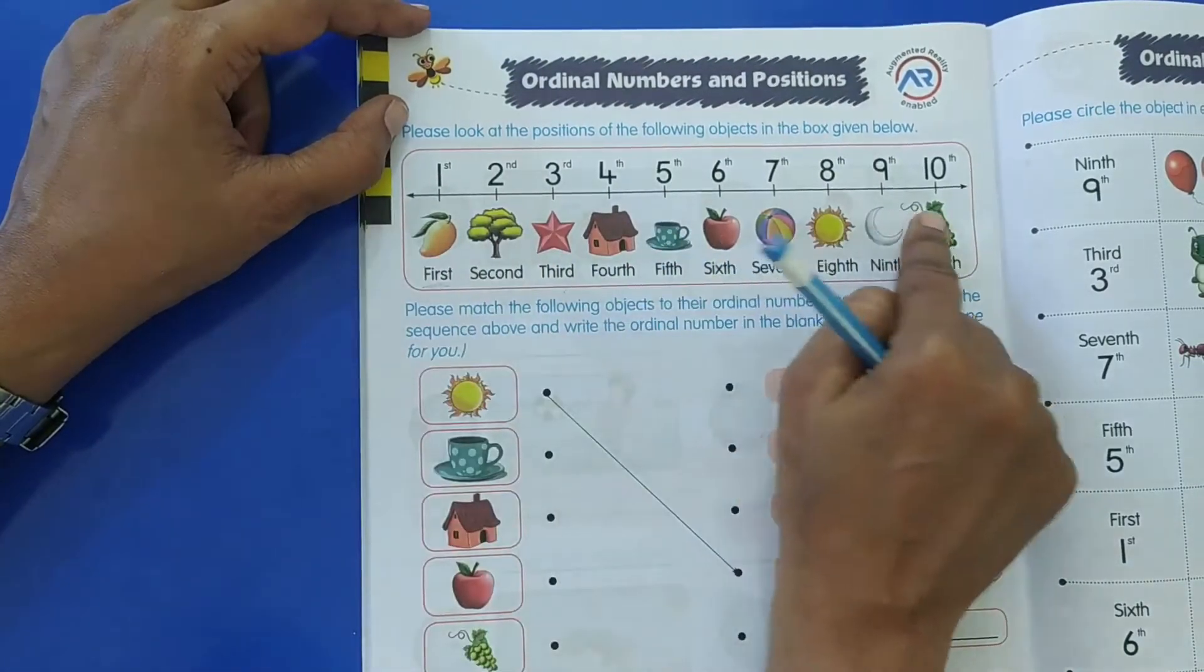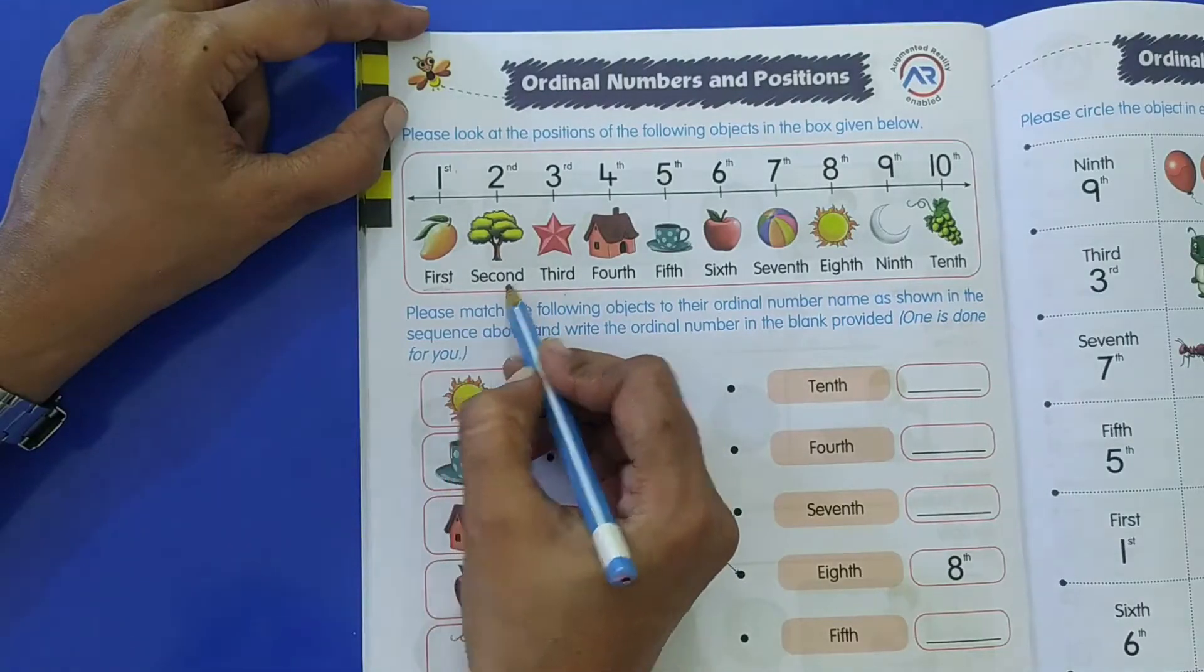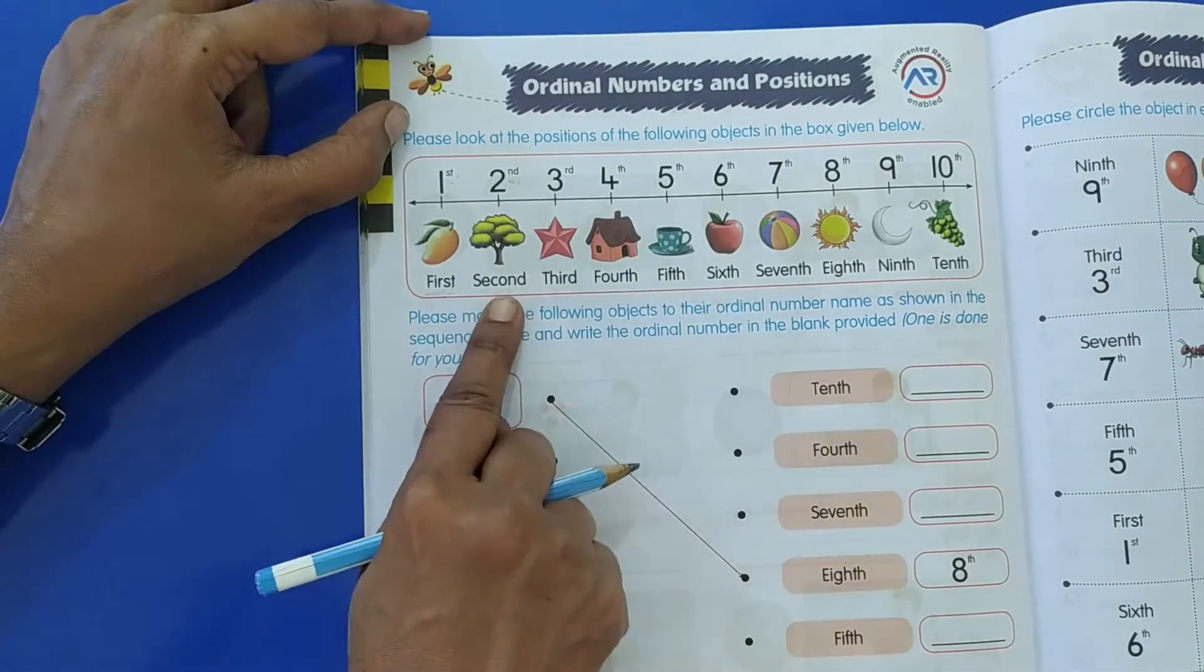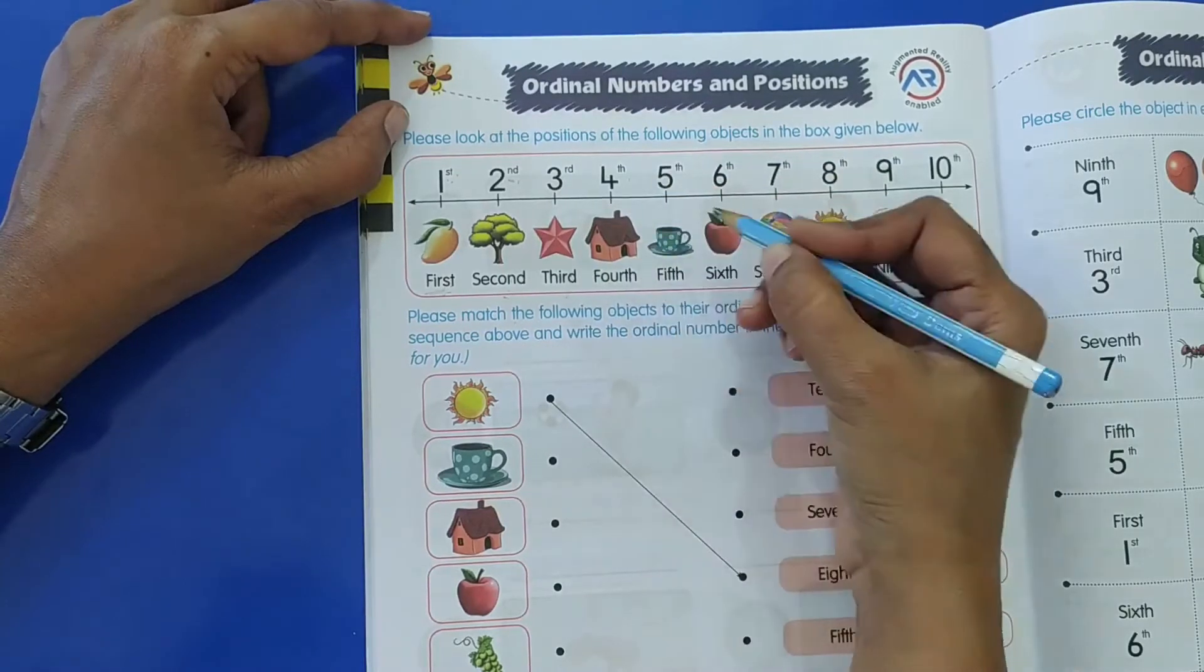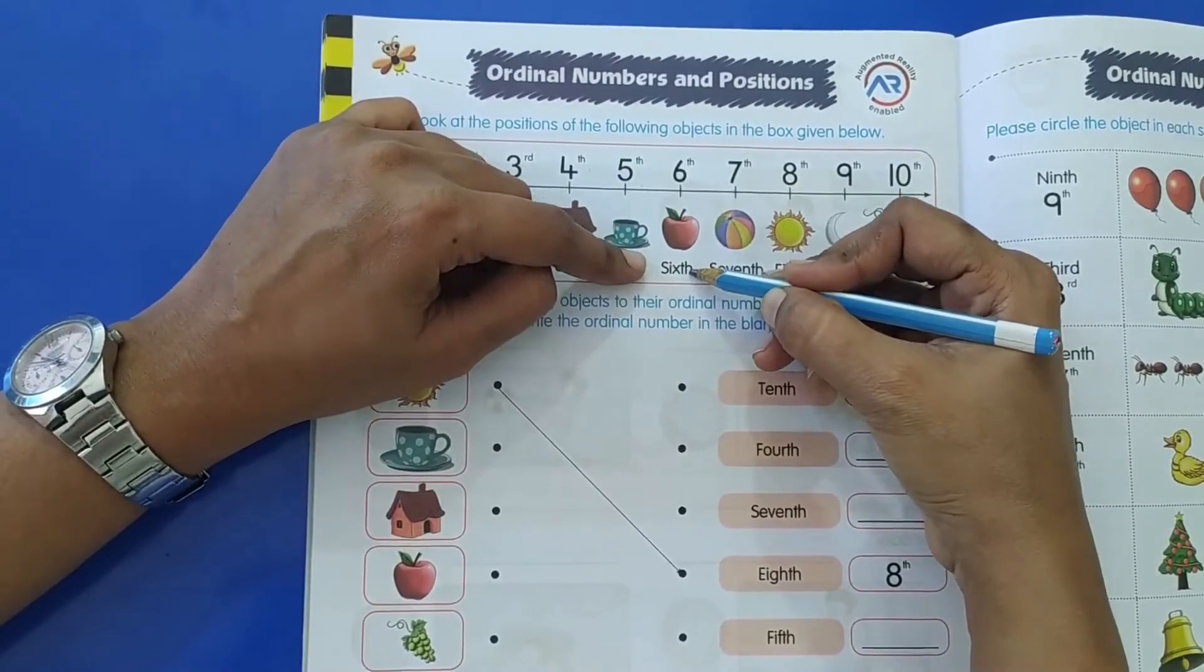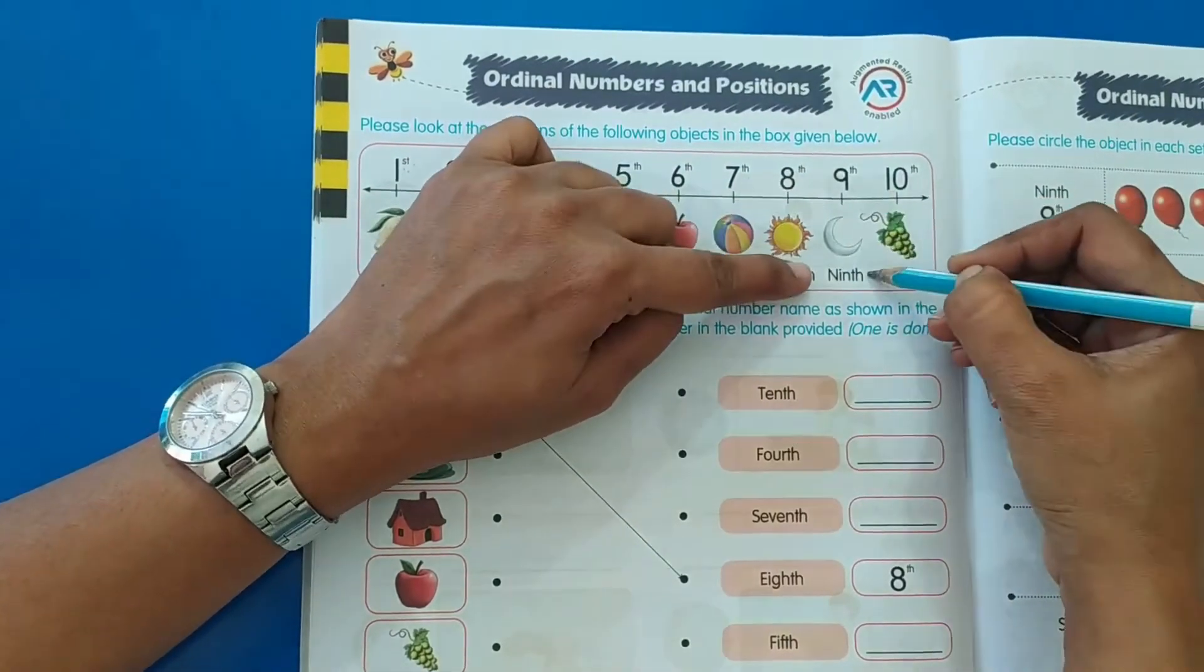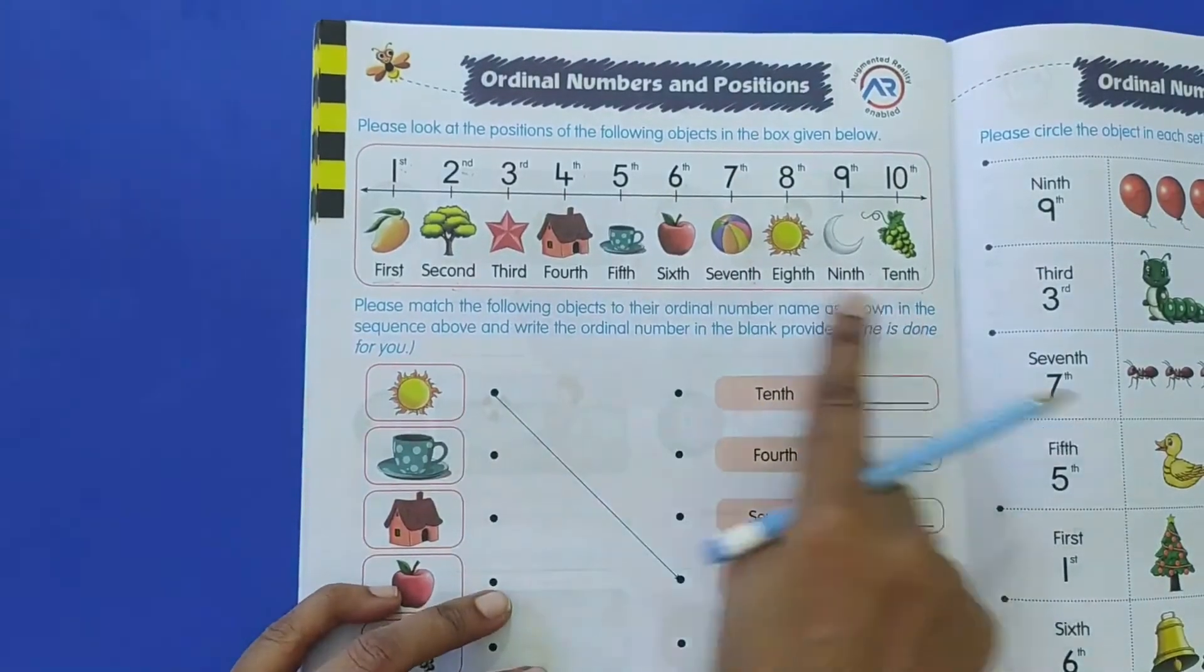So your position on the number line. Let's see, where is the mango? Mango is first. Which object is second? The tree is second. And when we write ordinal numbers, we will put this nd at the top. So second, the star is third. House is fourth. The cup and saucer is fifth. Apple is sixth. The ball is at the seventh position. Sun is on the eighth position. The moon is on the ninth position. And grapes are at the tenth position. So these are called ordinal numbers or positions.